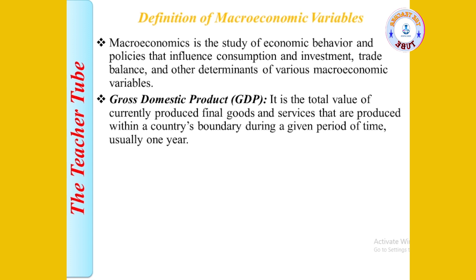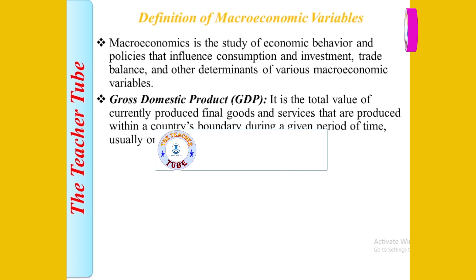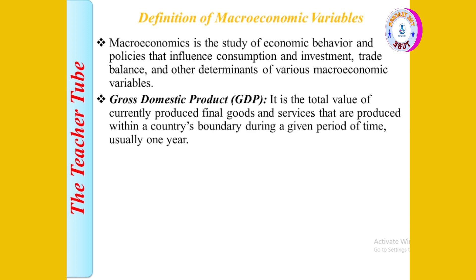Gross domestic product, or GDP, is the total value of currently produced final goods and services that are produced within a country's boundary during a given period of time. GDP covers only the final distribution of goods and services.